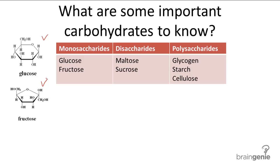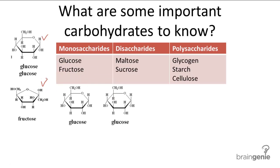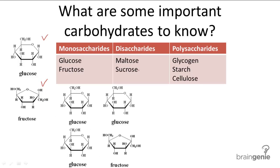Disaccharides are really straightforward. Maltose is made of two glucose molecules, and sucrose is made of a glucose and a fructose molecule. Sucrose is just known as our everyday table sugar.